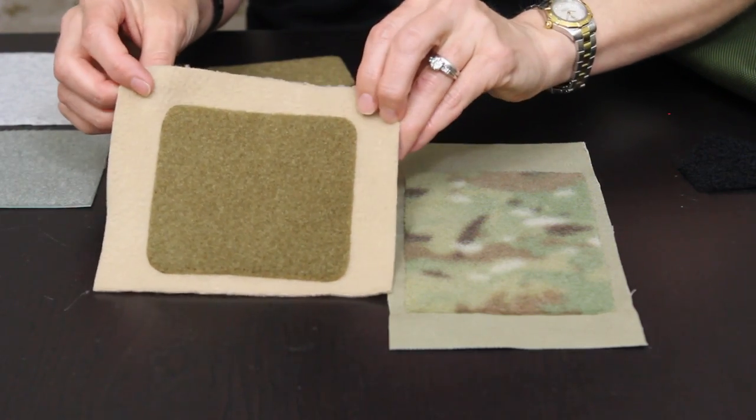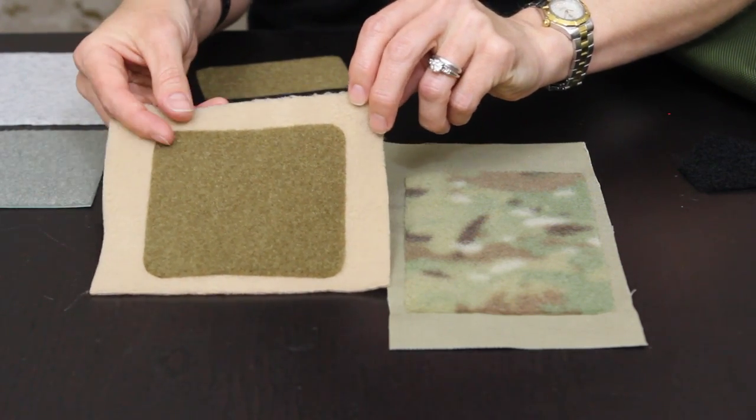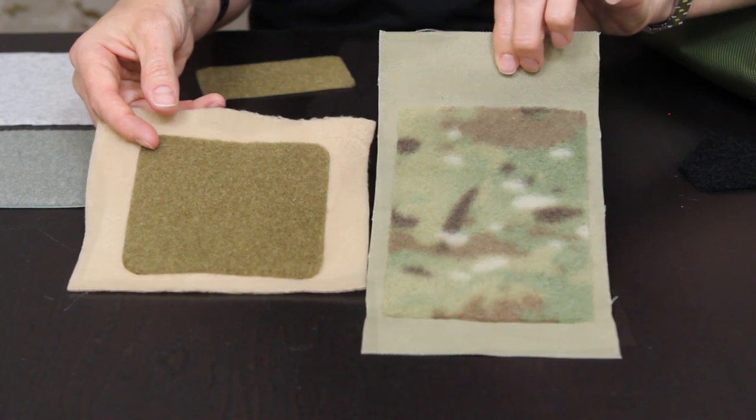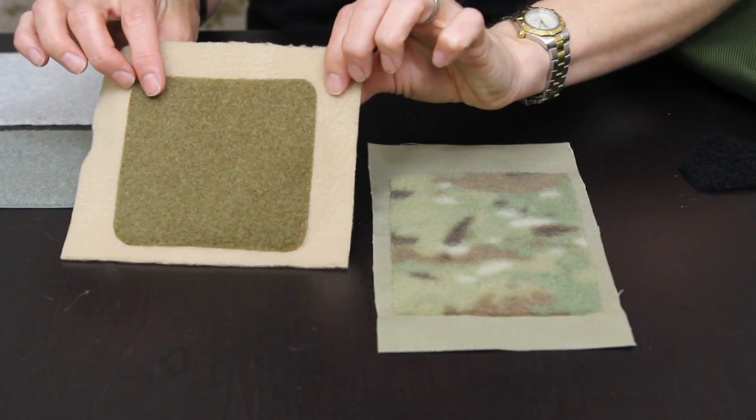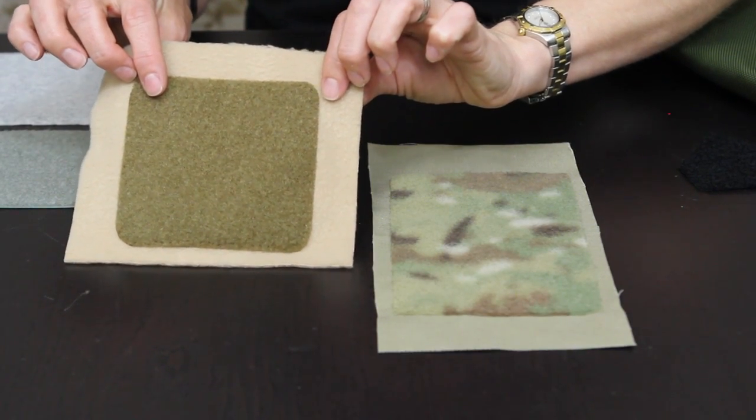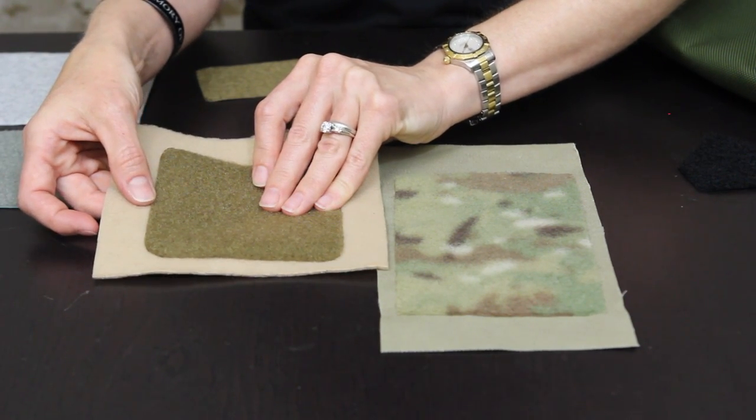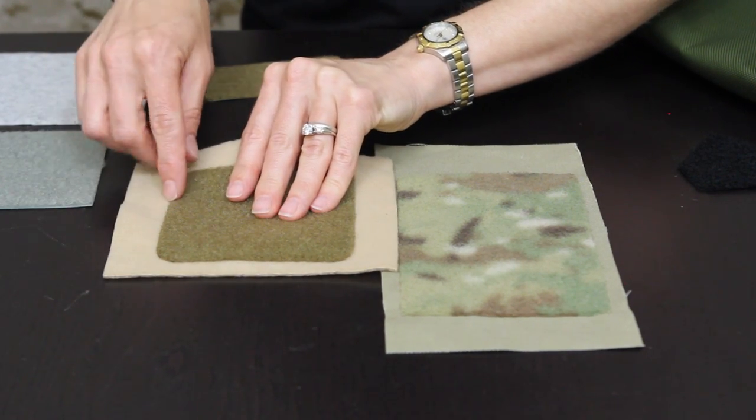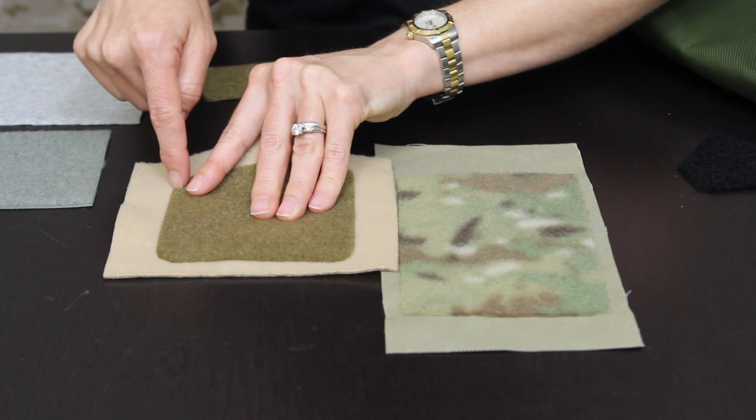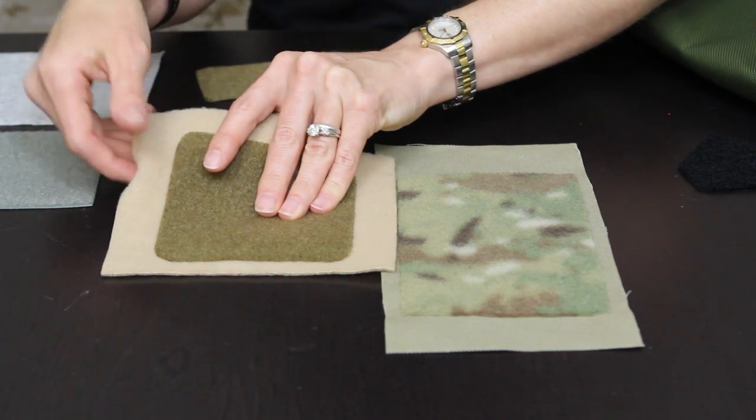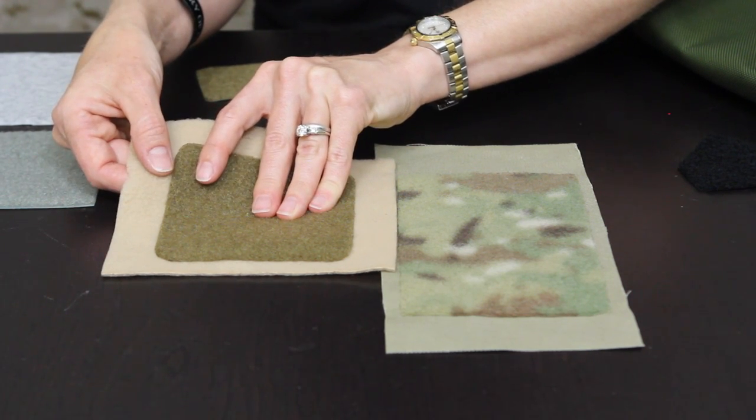So here is just a generic fleece purchased from the local craft store and this is a nylon twill fabric. So I stitched a square of our coyote brown loop and I just stitched this on by hand and I found that if I used really small tight stitches it makes the stitching virtually invisible.